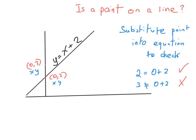Another thing you might be asked is whether a particular point is on a line. You may be given a point that's not on the line and one that is. Without a diagram, the best way is to substitute each point into the equation. Because these are x and y values — substitute them in. If the equation is true afterwards, then you know the point is on the line.